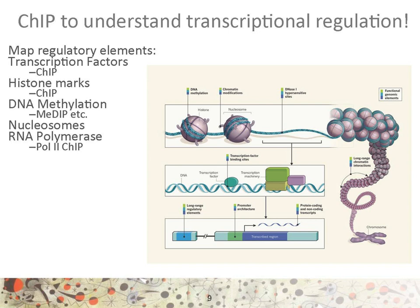ChIP has further applications. One can, for example, target the RNA polymerase itself and devise which genes are actively transcribed. One can also use techniques called chromosomal conformation capture to look at long-range interactions within and between chromosomes.